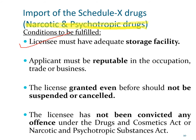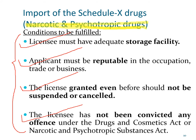The licensee must have adequate storage facility. The licensee or applicant must be reputable. The license granted before should not have been suspended or cancelled — if a previous Schedule X import license was suspended or cancelled, the applicant cannot reapply. The licensee should not have been convicted of any offense under the DNC Act or the Narcotic and Psychotropic Substances Act. Only on fulfilling these conditions can an importer apply in Form 8A and obtain the import license.